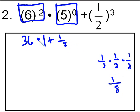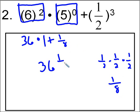Thirty-six times one is thirty-six, plus one-eighth is thirty-six and one-eighth.